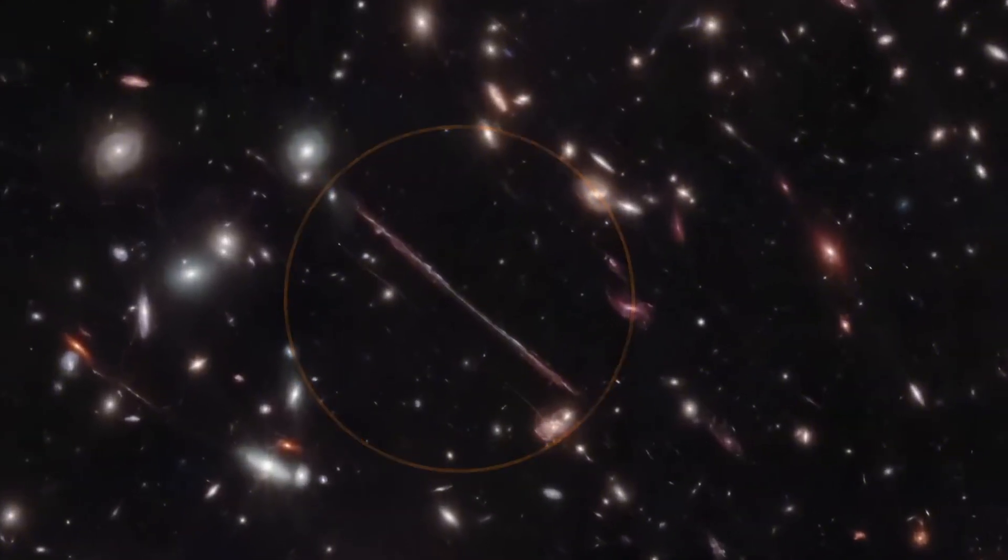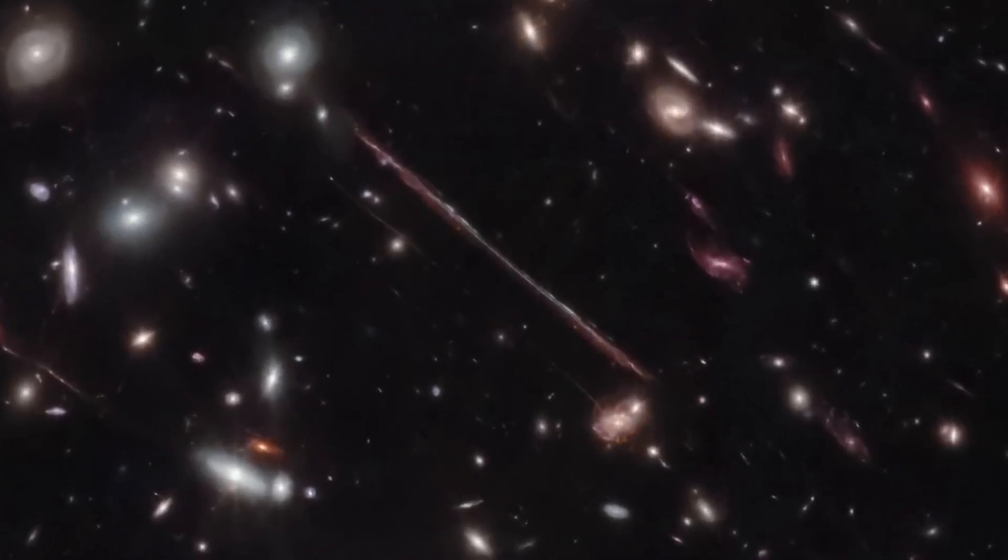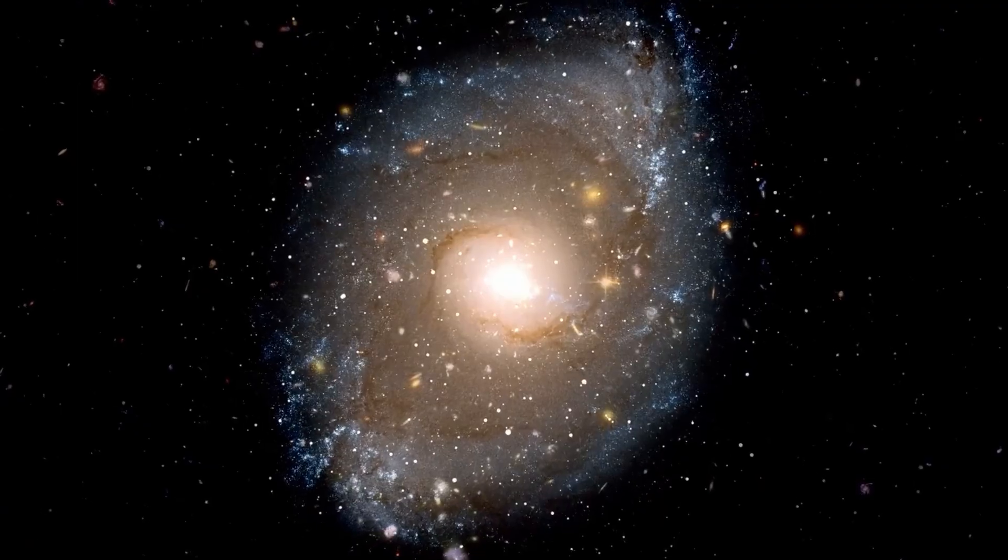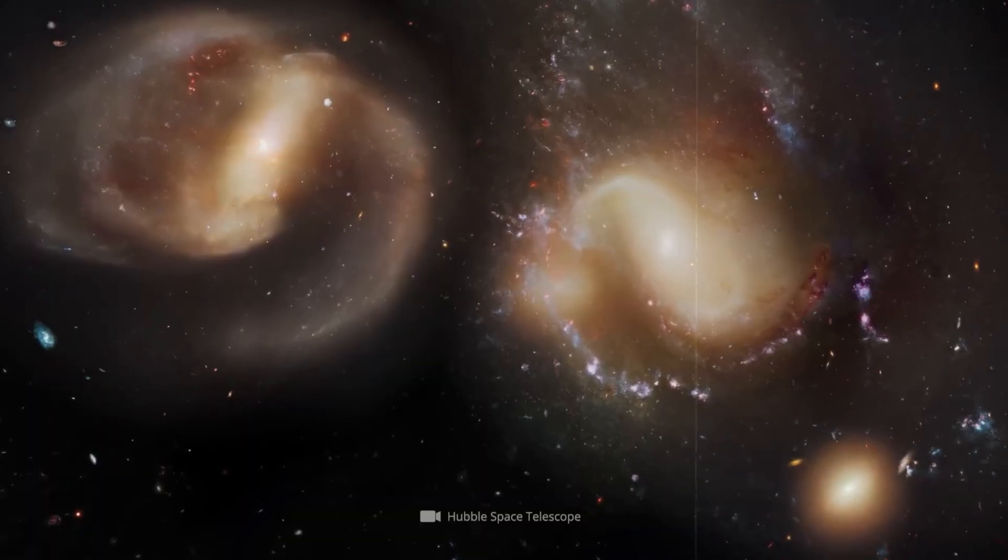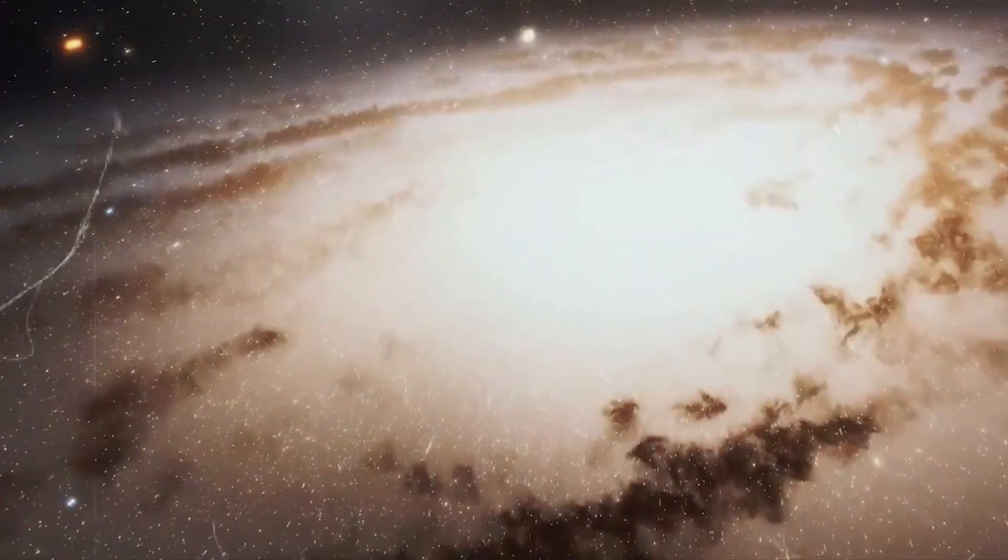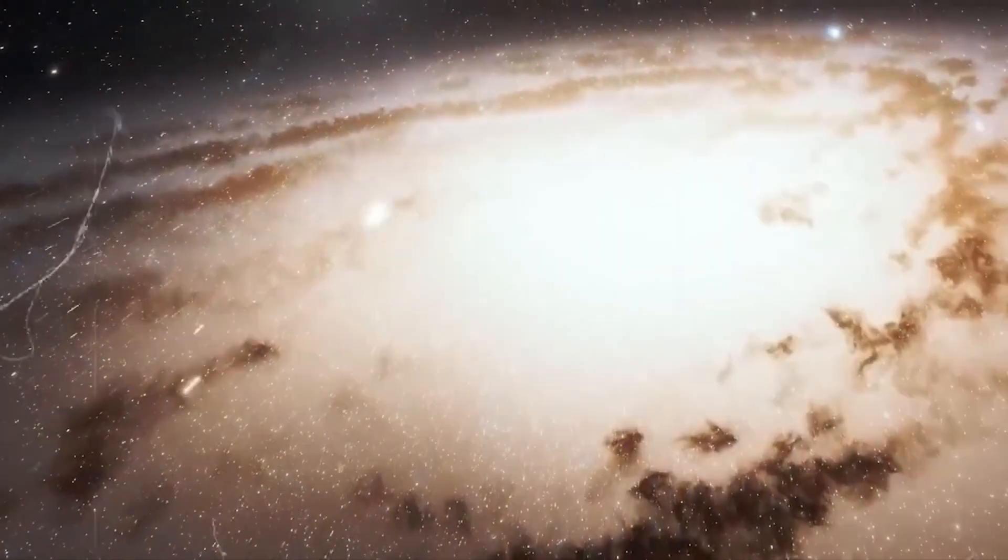Then came a discovery that sent shockwaves through the astronomy community. Webb's infrared eyes locked onto not one, but two ancient galaxies. Galaxies unlike anything we've cataloged before. Their shapes, their glow, they didn't fit the patterns we know.